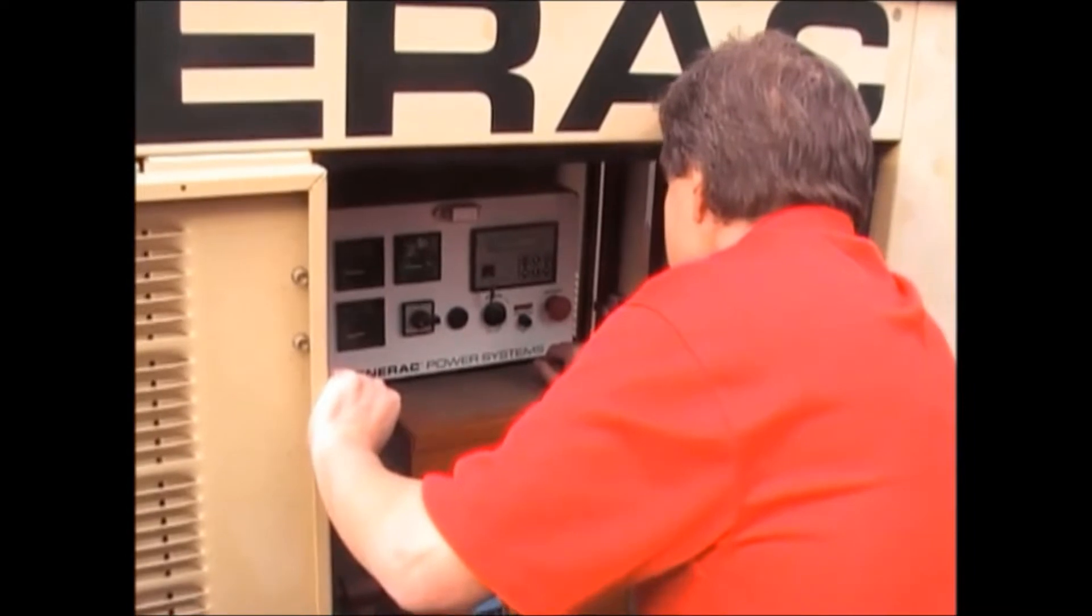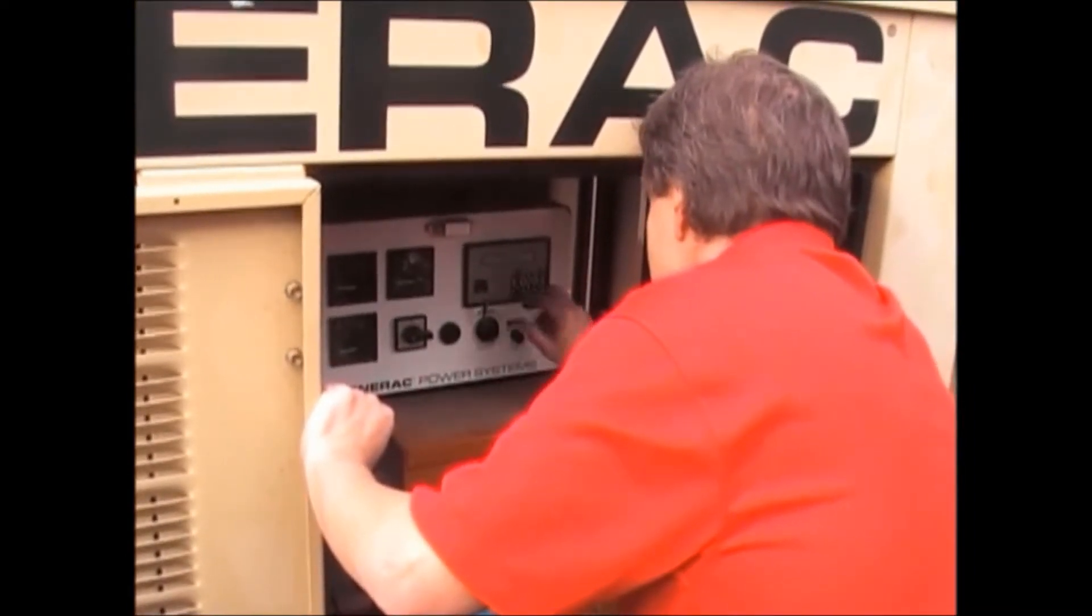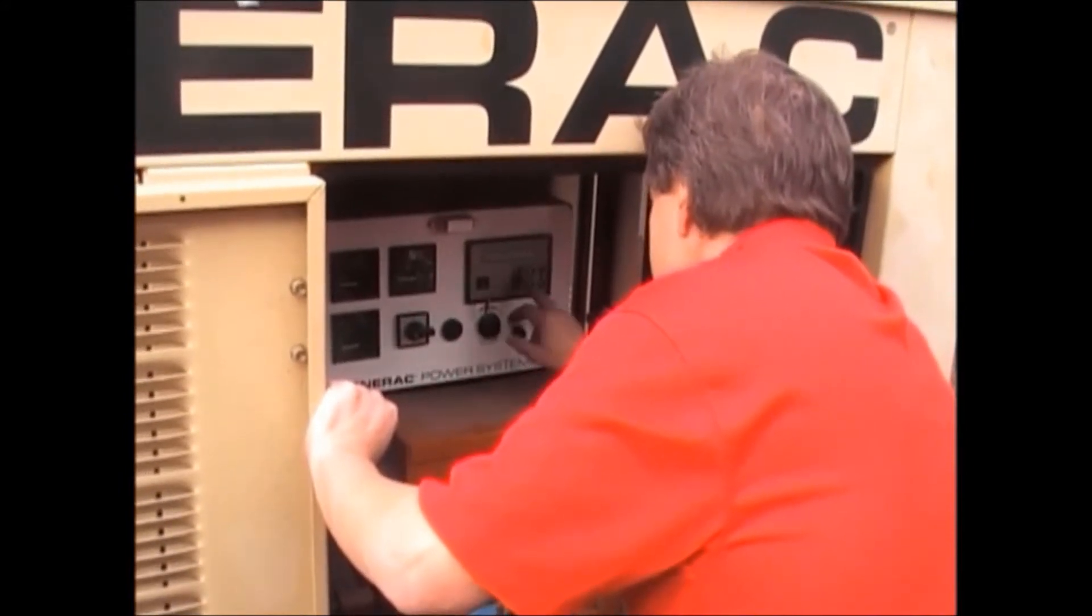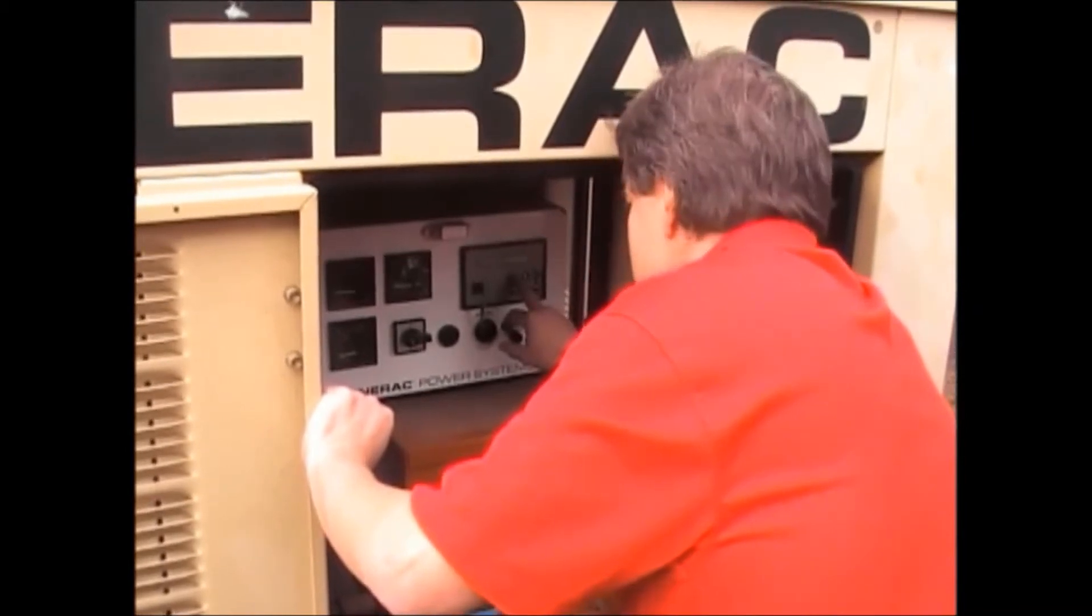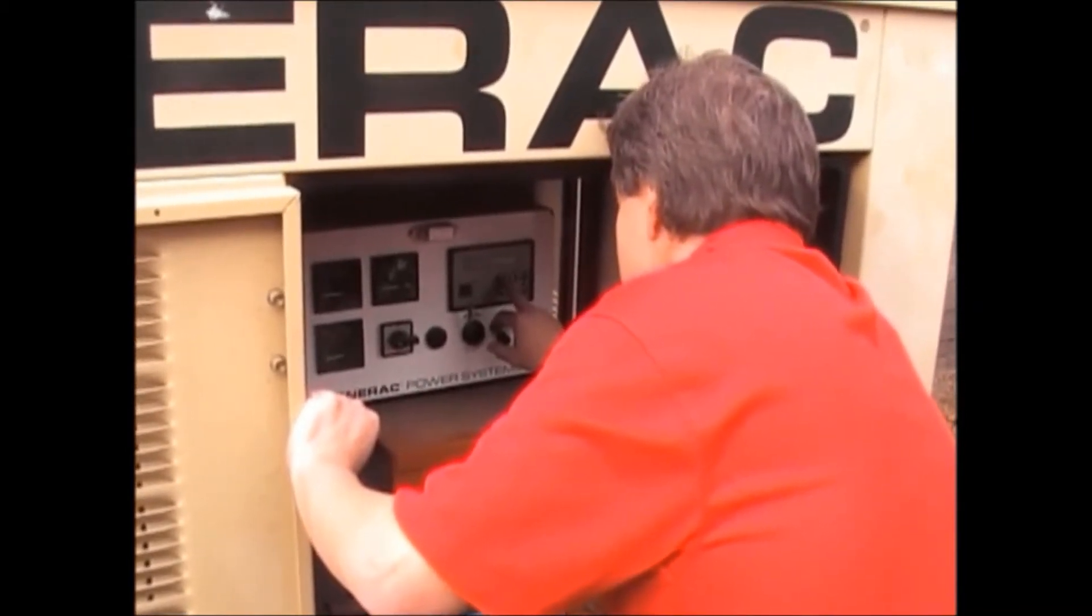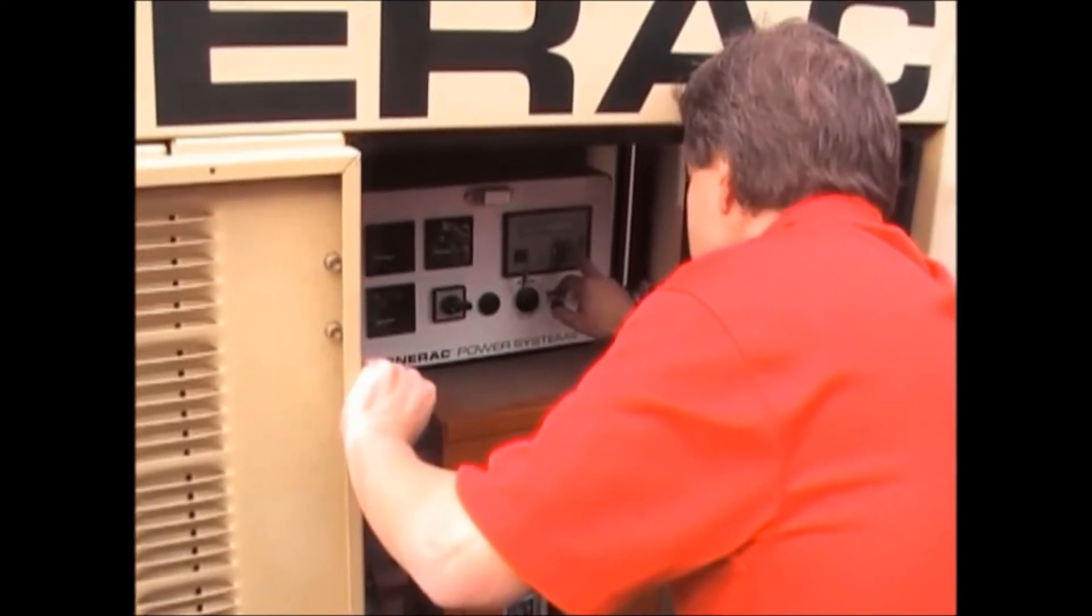Then we go through the same process, choose output number two and we're going to choose not in auto for that option. And that also is called in manual, so that's the equivalent to not in auto.